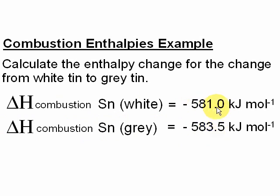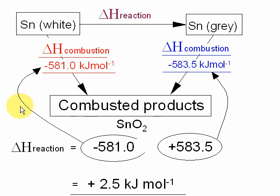Using this data, you'll be able to work out the enthalpy change to go from one allotrope to the next. Here's the Hess cycle — the reaction is going from white tin to grey tin. This reaction enthalpy we don't know. However, we do know that to combust the white tin, we've been given the enthalpy change for that reaction, and that will give you the combusted products, which will be tin oxide.